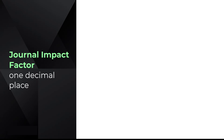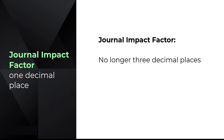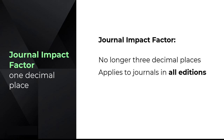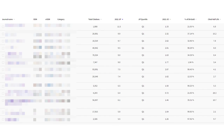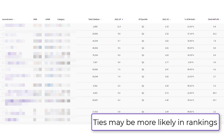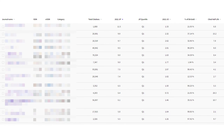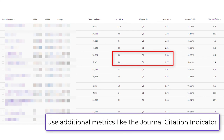Another significant update in the 2023 JCR is a change to the display of JIFs across all subject categories. JCR will now display the JIF to one decimal place, rather than three decimal places as it has been in past years. The use of one decimal place means it's more likely that ties will occur in subject category rankings. In the event of ties, you are encouraged to use additional metrics from a journal's profile, like the Normalized Journal Citation Indicator, to better understand a journal's overall performance.